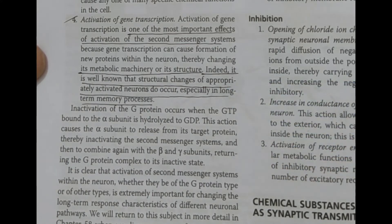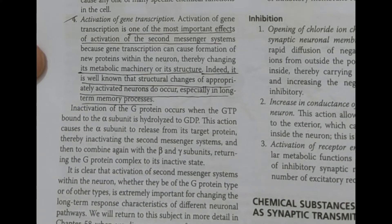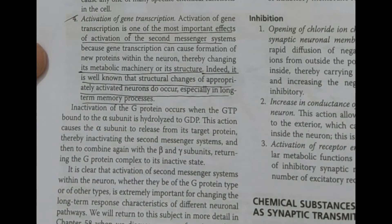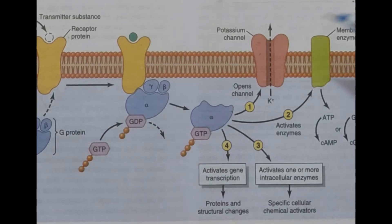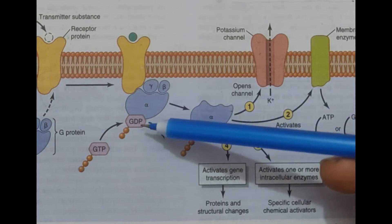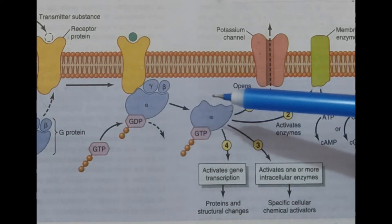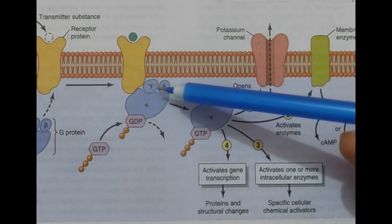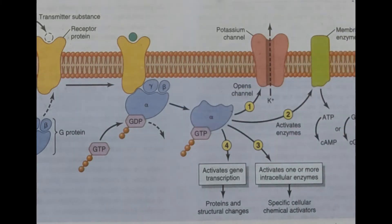Gene transcription is one of the most important effects of the second messenger system because the metabolic machinery continues to change through genetic modification, creating new proteins. This is vital for long-term memory processes. When the overall function is done and inactivation occurs, the G protein reverses: GTP converts back to GDP, and the alpha unit reunites with beta and gamma, returning to its original state.